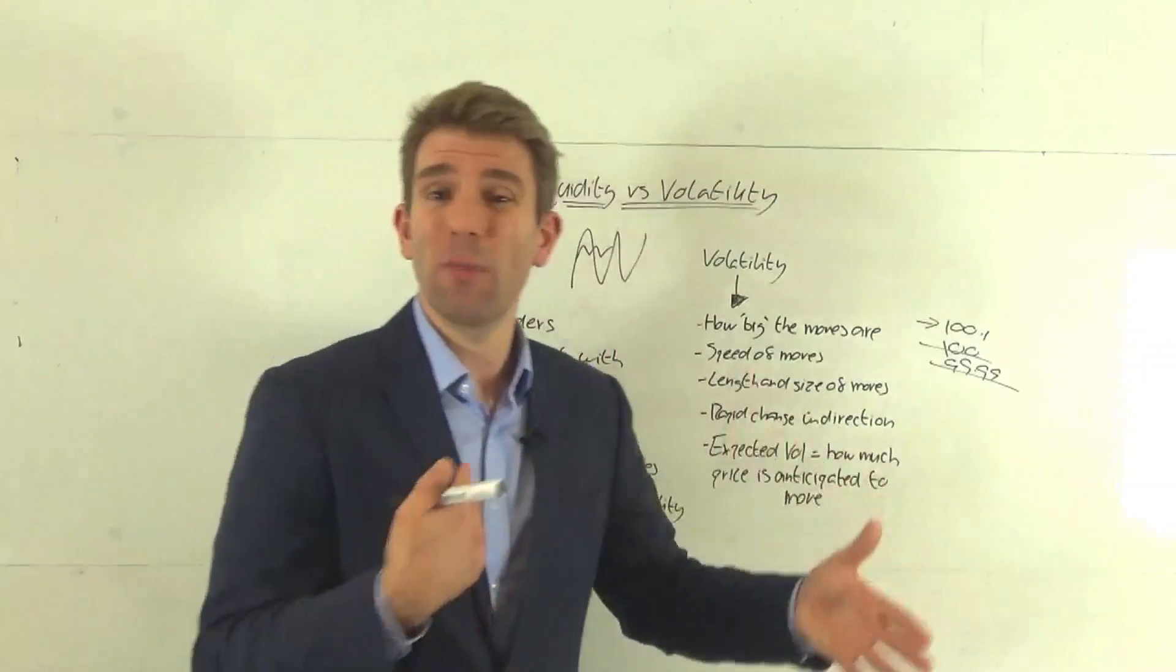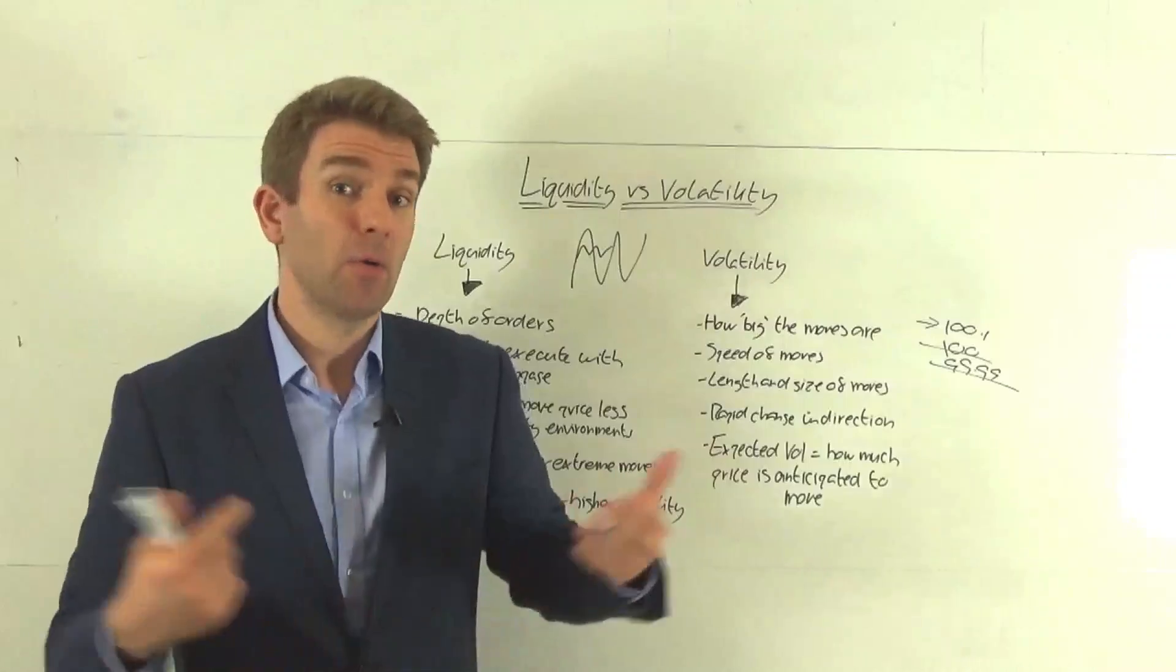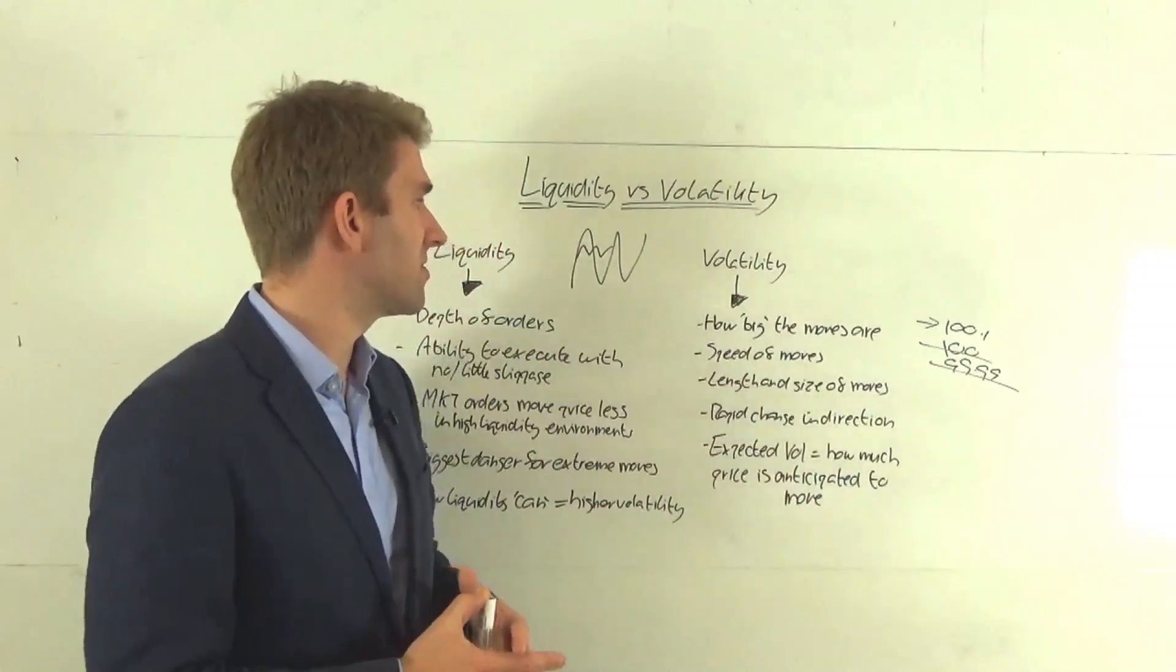So we have a volatility expectation of, hey, this stock might move up or down 8% on earnings day, depending on what the earnings come out. No one knows what the earnings are going to be. But we expect that's the reaction. So that's what expected volatility is.